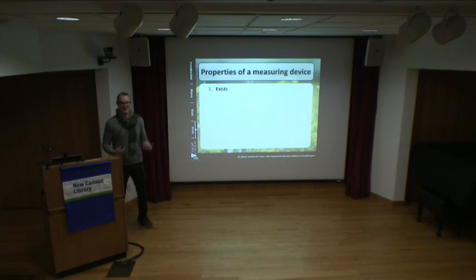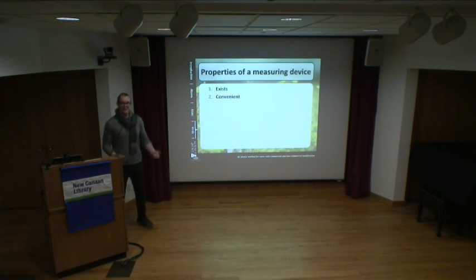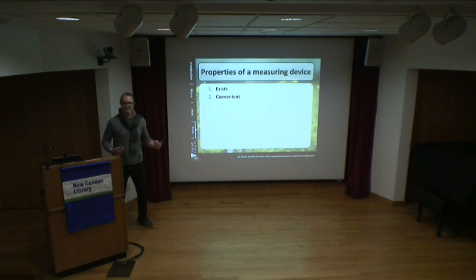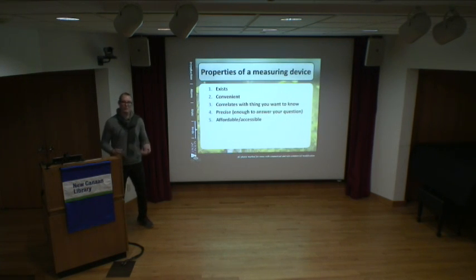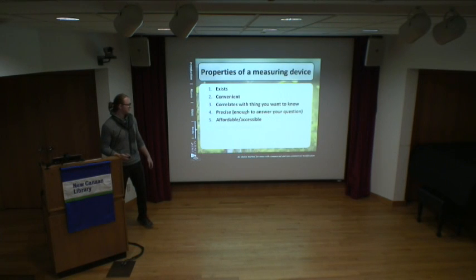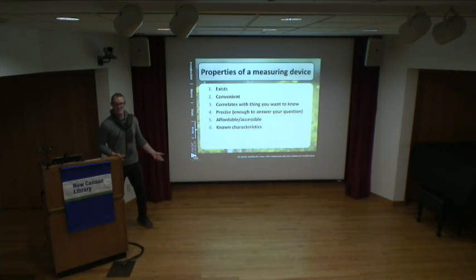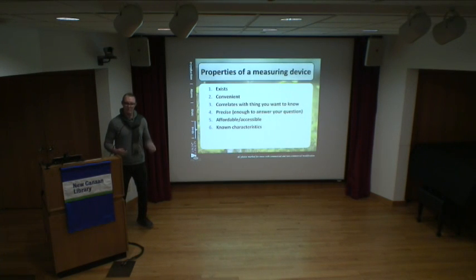Properties of a good measuring device: one, they must exist — pretty sure birds are real. Two, it should be convenient enough to actually use. Three, it should correlate with what you want to know, as closely as you need. Four, it should be precise enough to answer your question. Five, it should be affordable or accessible — physically or financially. And six, you should know about the tools you're using; you shouldn't blindly trust them.